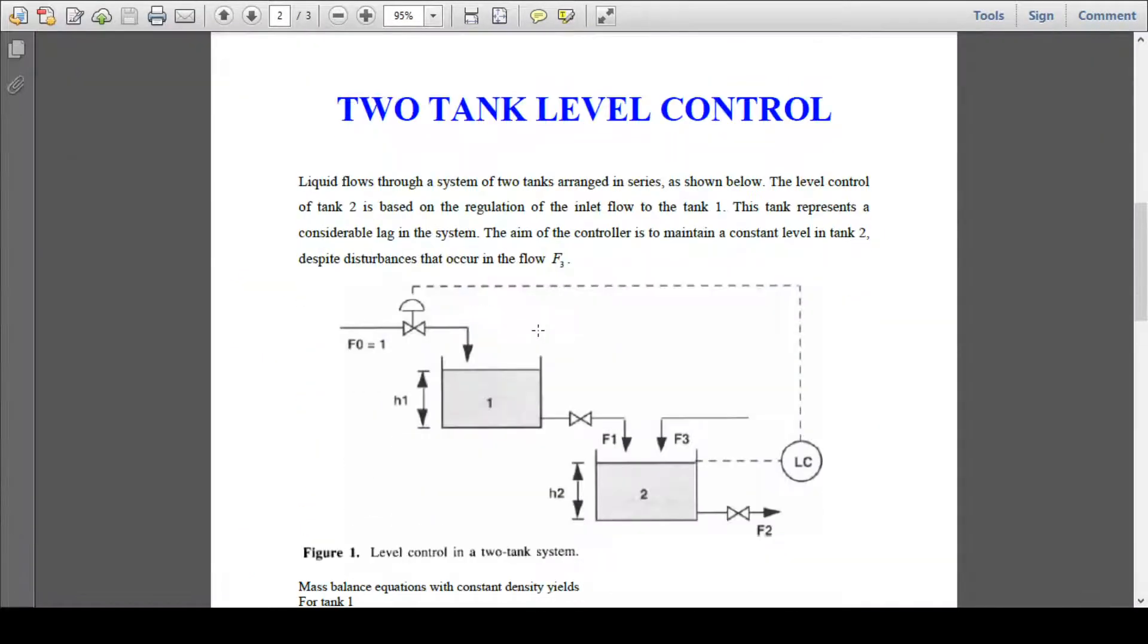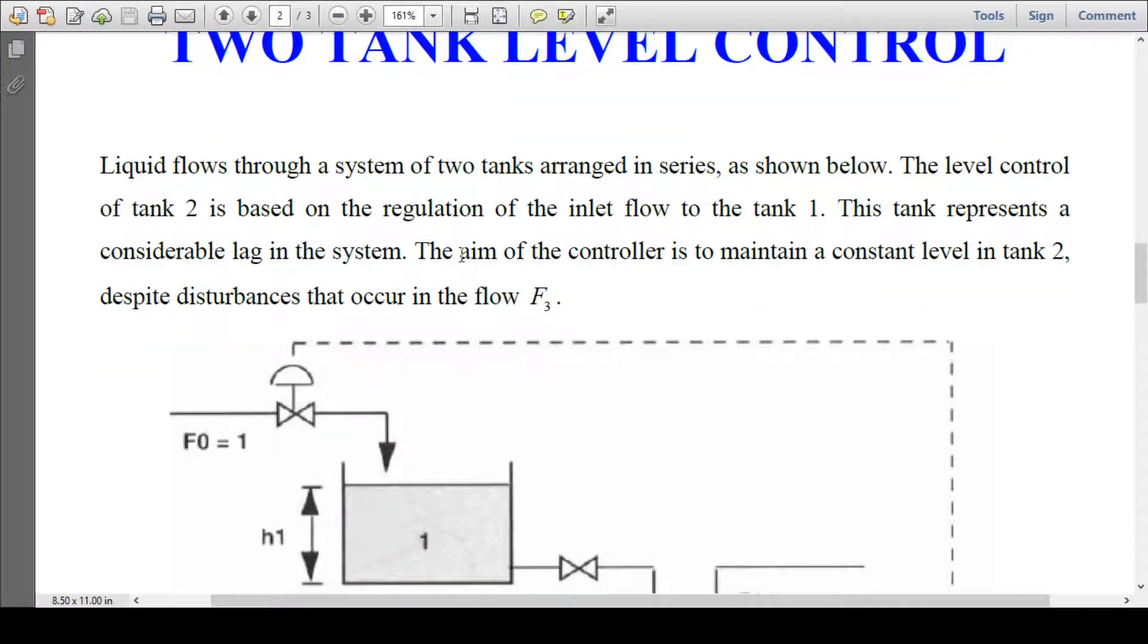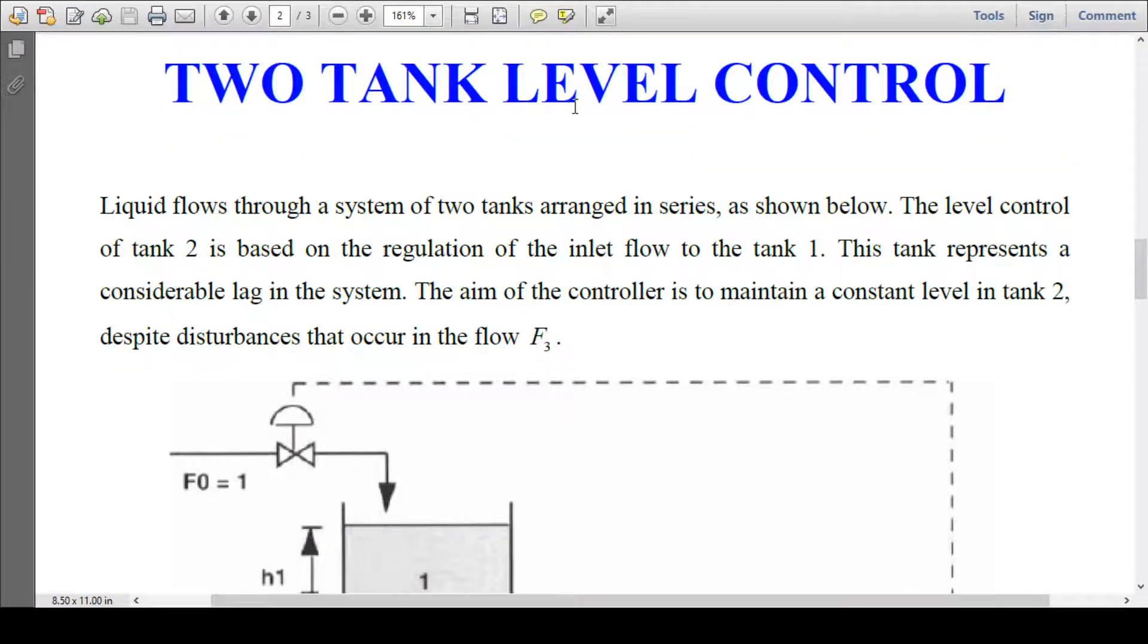We see the problem statement here: two tank level control. The liquid flows through a system of two tanks arranged in series as shown below. The level control of tank 2 is based on the regulation of inlet flow to tank 1. This tank represents a considerable lag in the system. The aim of the controller is to maintain a constant level in tank 2 despite disturbances that occur in the flow F3.